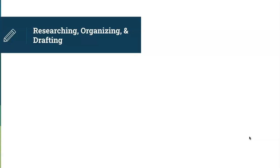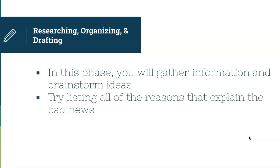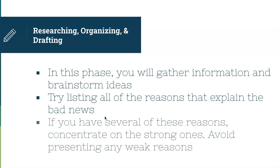In the second phase — researching, organizing, and drafting — you'll gather information and brainstorm ideas. If it's a more intricate situation, make sure you have all the facts laid out clearly so you can give your receiver a great understanding of what happened. A good strategy in this phase is listing all of the reasons that explain the bad news — everything that led up to this situation. If you have several reasons, concentrate on the strong ones and avoid presenting any weak reasons, because that's what an audience will latch onto and it might create a more hostile reaction.